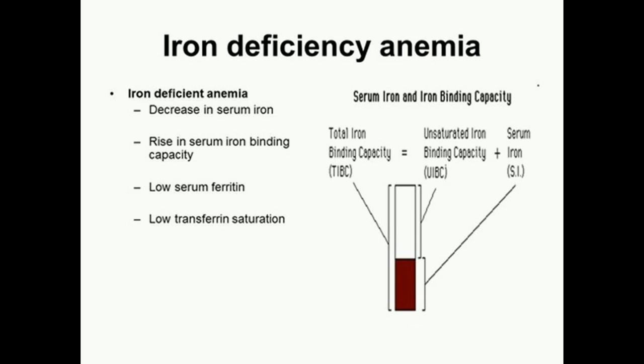Total iron binding capacity increases in iron deficiency anemia and decreases in infections. It also decreases in hemochromatosis, decreases in thalassemia, as well as decreases in pernicious anemia or vitamin B12 deficiency.